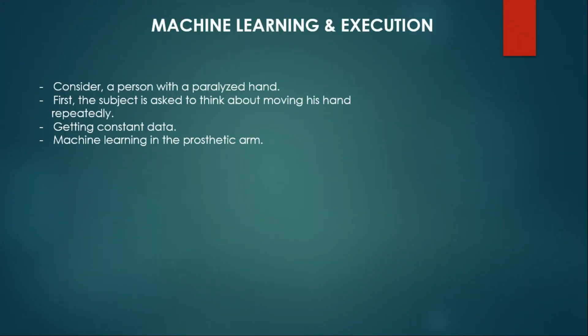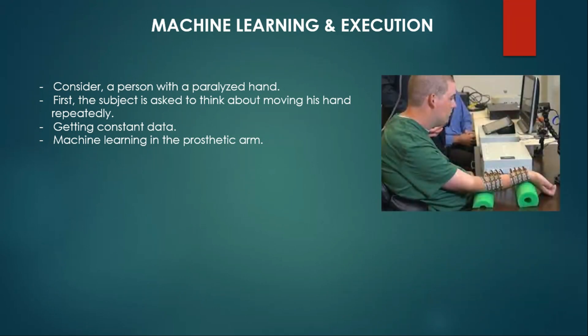Now we'll get to the machine learning and execution. Consider a person with a paralyzed hand. Let's take an example. At first, this subject is asked to think about moving his hand repeatedly. We will first teach him how to think about moving his hand. Repeatedly, when you think about moving his hand, you can see in the EEG monitor there is constant data.